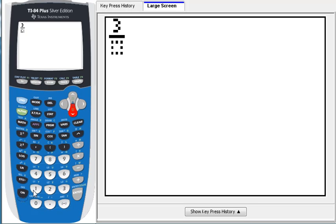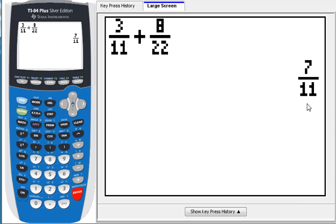How about we add 3 elevenths to alpha y equals. Puts in the template. 8 over 22. Arrow over. To finish that fraction, I press enter. And the calculator gives us the answer as a fraction. Nice.